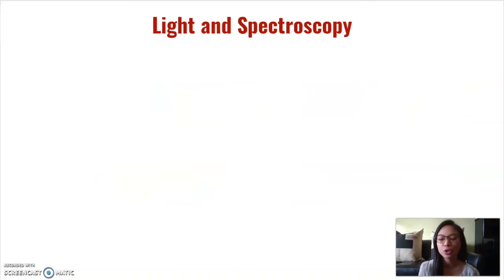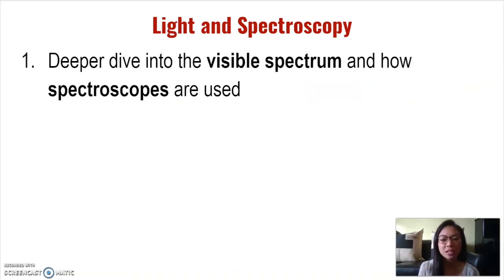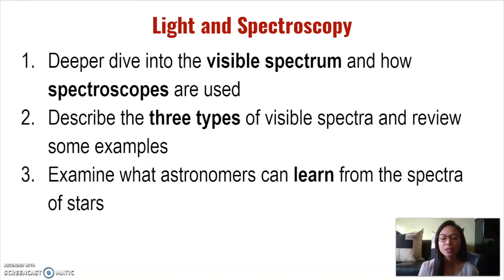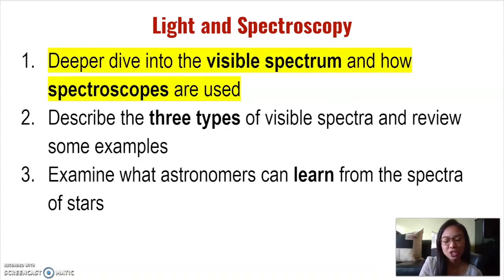Here are the things we're going to learn in this video. First, we're going to learn more about the visible spectrum and how a tool called the spectroscope can be used. Second, we'll describe the three types of visible spectra we might expect to see from using a spectroscope and go through some examples of each. And finally, we're going to examine what astronomers can learn from the spectra of stars.